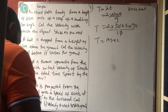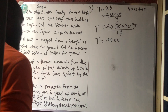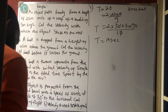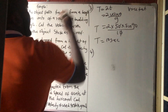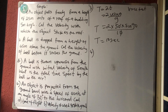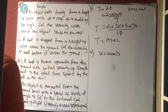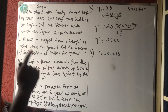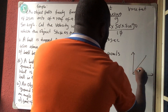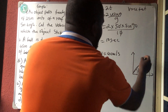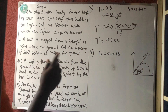Now let's look at number 4. An object is projected from the ground with a speed of 40 meters per second at an angle of 30 degrees with the horizontal. Please be careful — sometimes they say with the vertical; if so, do 90 minus that angle to get the horizontal angle.